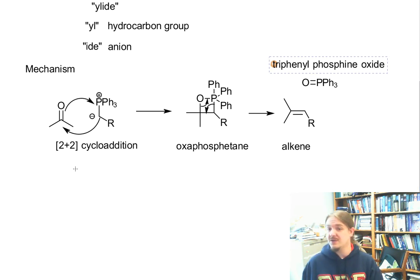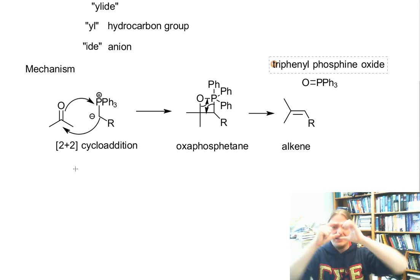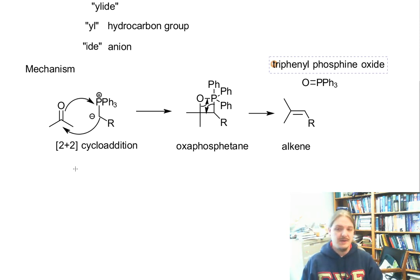So the mechanism is actually really pretty simple. 2 plus 2 cycloaddition, so two things come together and make a square. That square comes apart in the other direction. And you get an alkene and triphenylphosphine oxide. In the next video, I'm going to talk about the synthesis of these ylides and the different types of things are and can be. And then in the following video, we'll talk about ways that the Wittig reaction can be used to synthesize specific alkene targets. Thank you for watching.